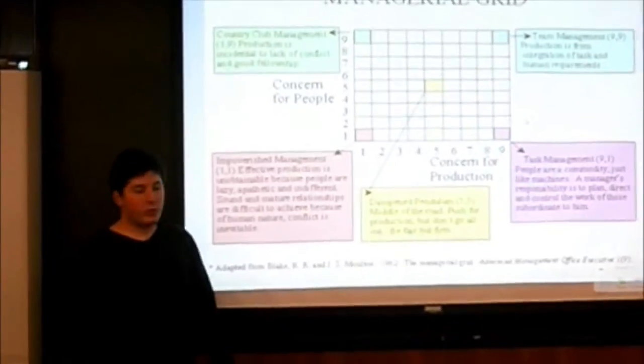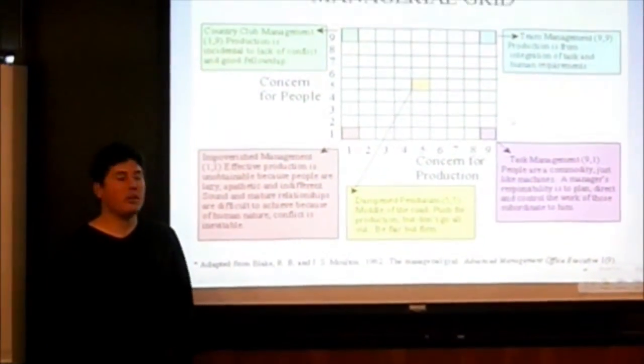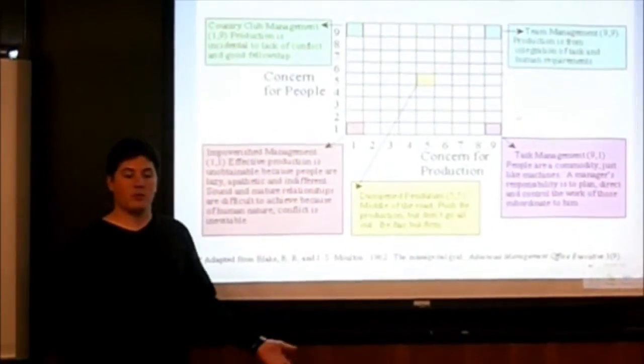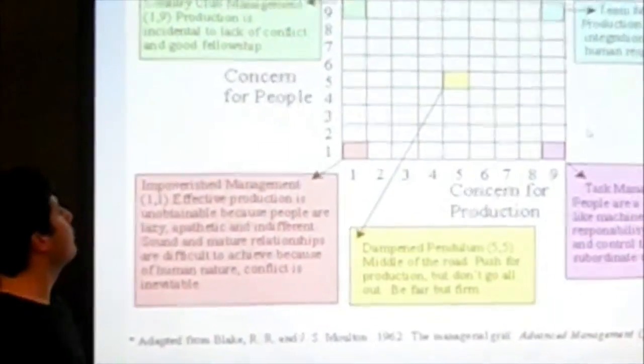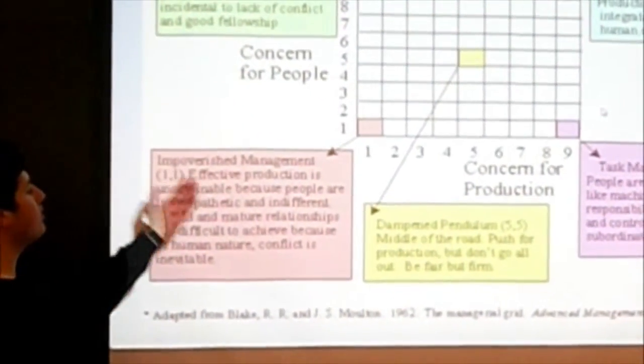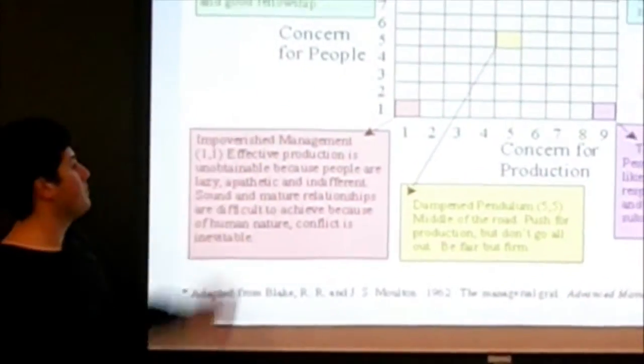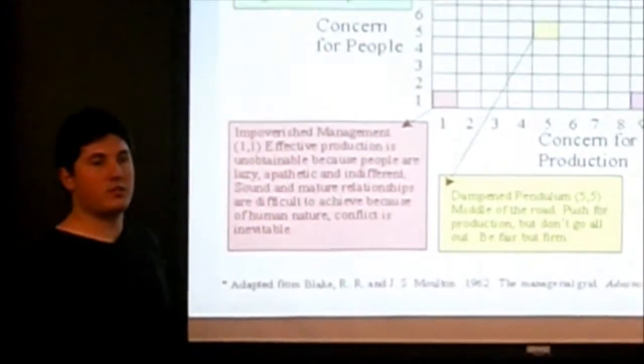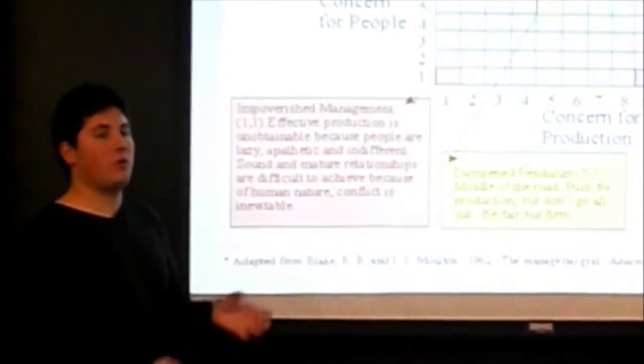Being a leader in a workplace is demonstrated by these five scenarios. I will be talking about the three that I found most important and the most drastic. For the first example, we have the one to nine, where the concern for people is much higher than the concern for production. This is an example of a country club, where people are basically paid to pamper the country club members and are not really that productive.